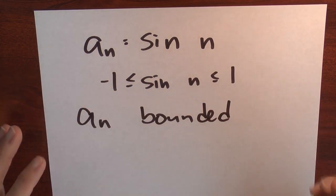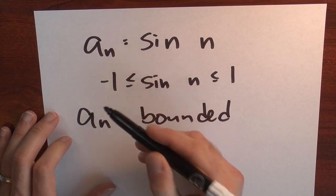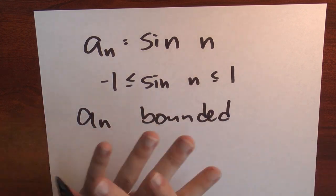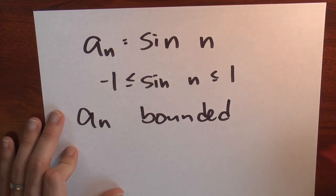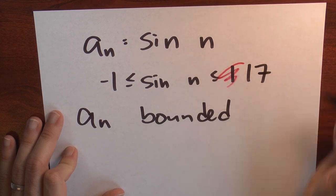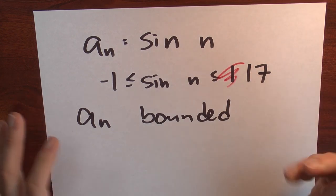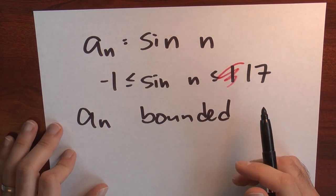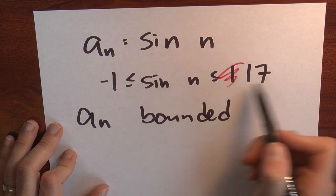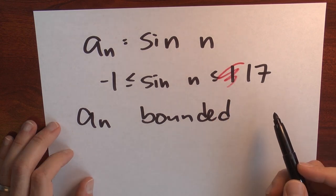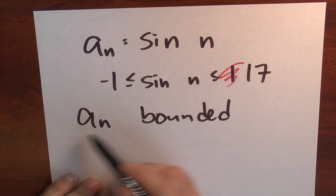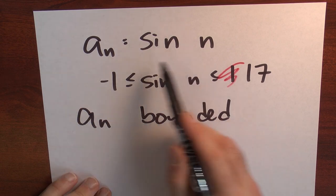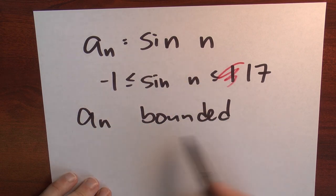You don't want to get the idea that 1 and −1 are the only choices for upper and lower bounds. I could also say that the sequence is bounded above by 17 — that would be accurate to say. So there are lots of choices for this upper bound. But in any case, in this example, the sequence sin(n) is bounded.